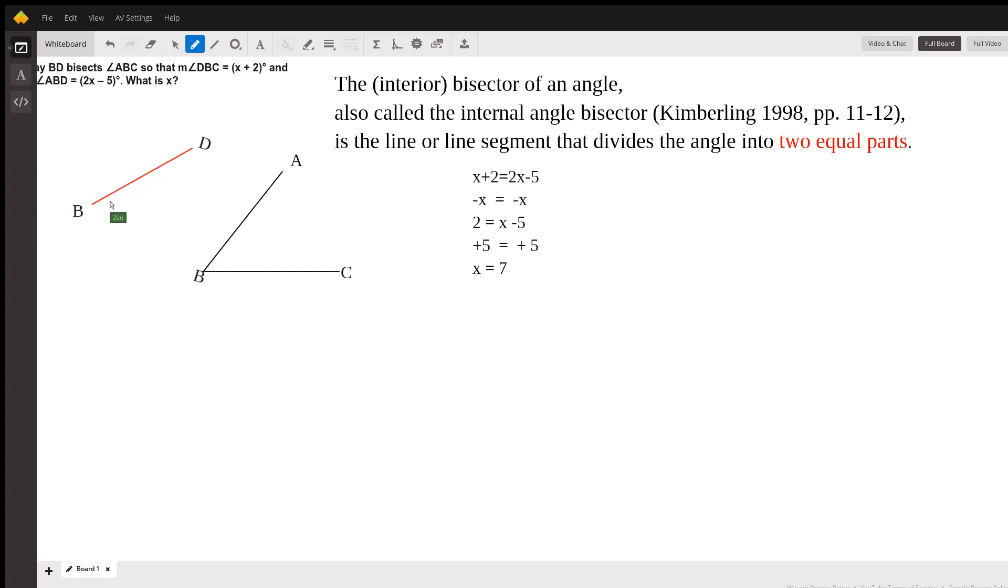So here we have Ray BD. Ray BD bisects angle ABC, which is shown here. So what we're going to do is put in the bisector there—that is an angle bisector.